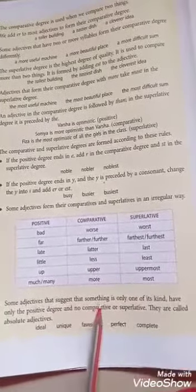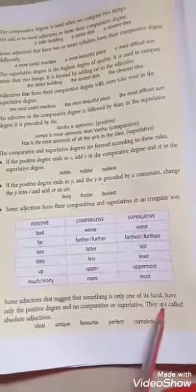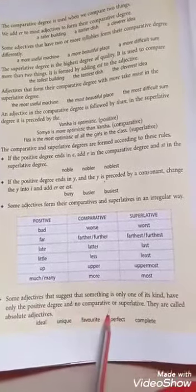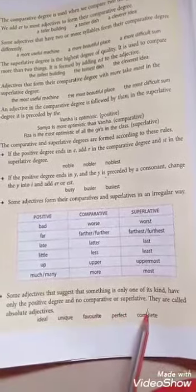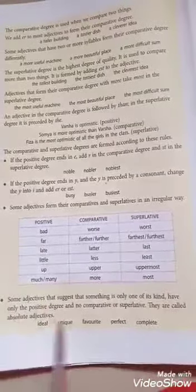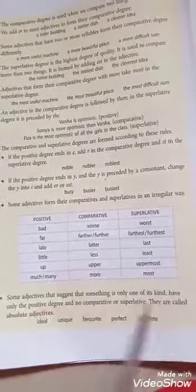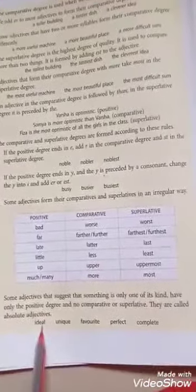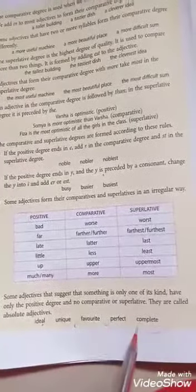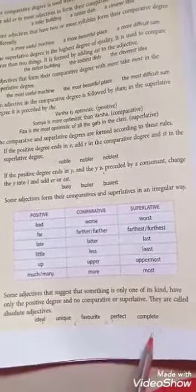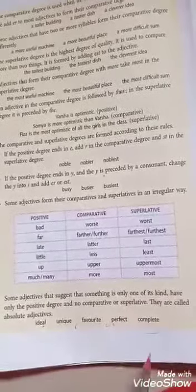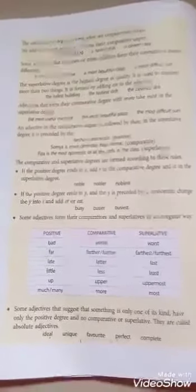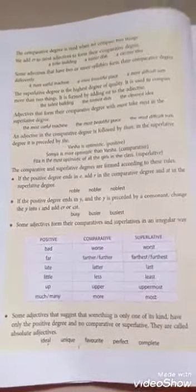Some adjectives suggest that something is unique of its kind and therefore have only a positive degree — no comparative or superlative. They are called absolute adjectives. For example: ideal, unique, favorite, perfect, complete. These adjectives don't have any comparative or superlative degree.